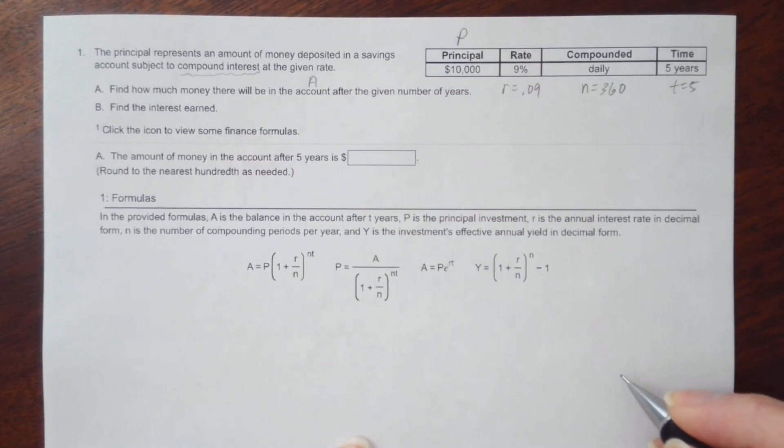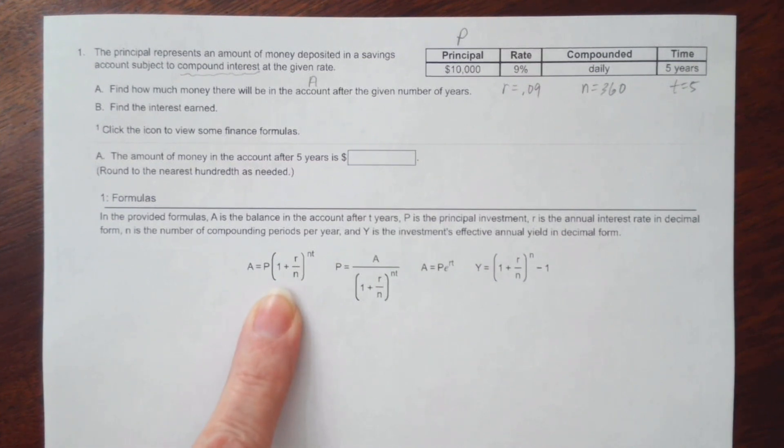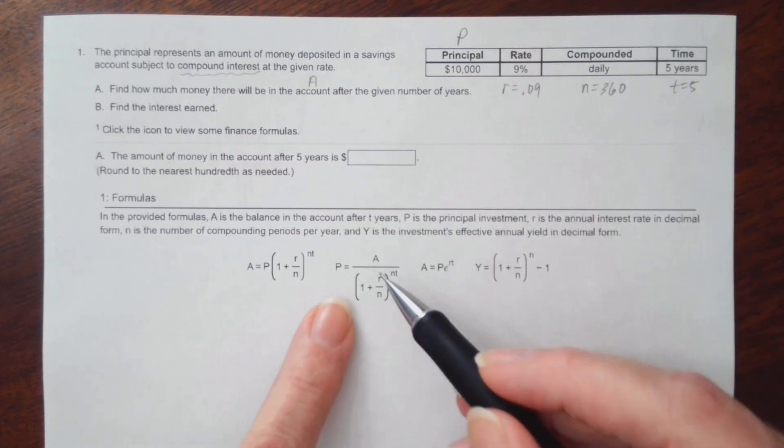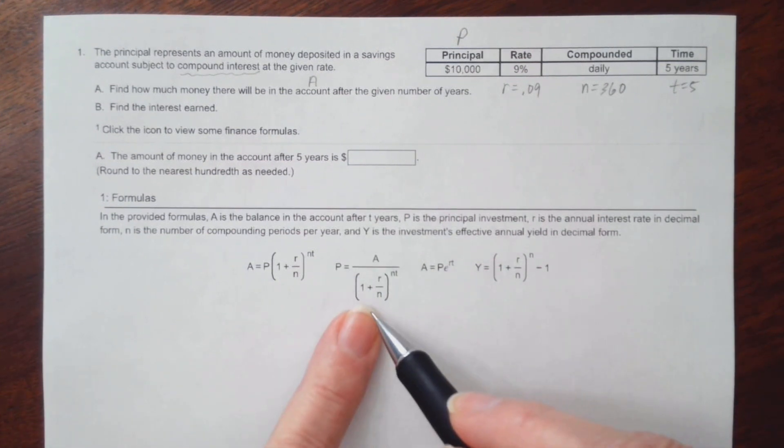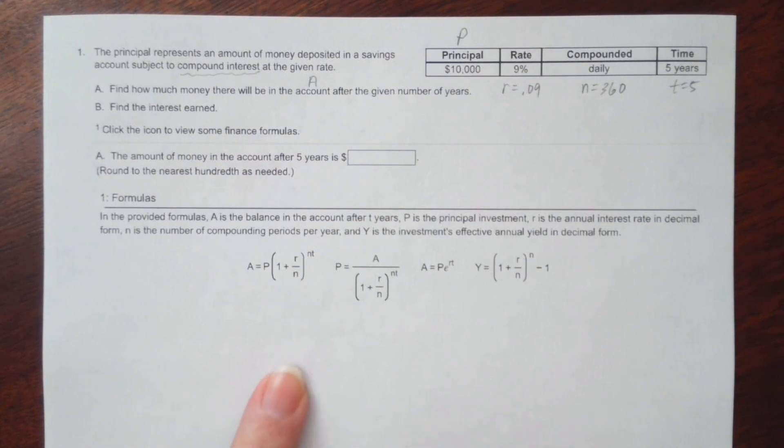So let's go ahead and, well, first of all, we got to know which formula to use. And that would be this one here. This is the formula for compound interest compounded n times per year. If we had been given A and we were looking for P, we would have used this formula and these are two totally different formulas.